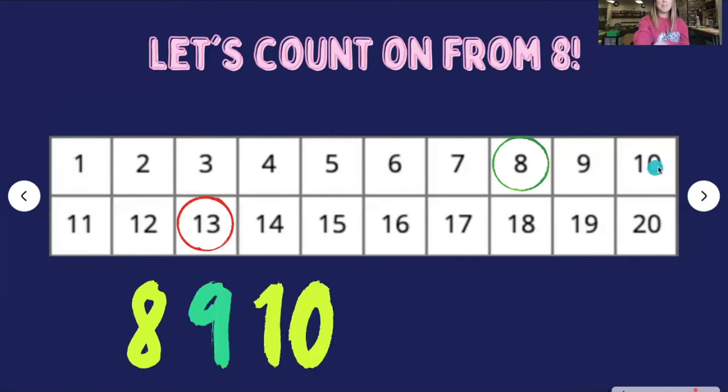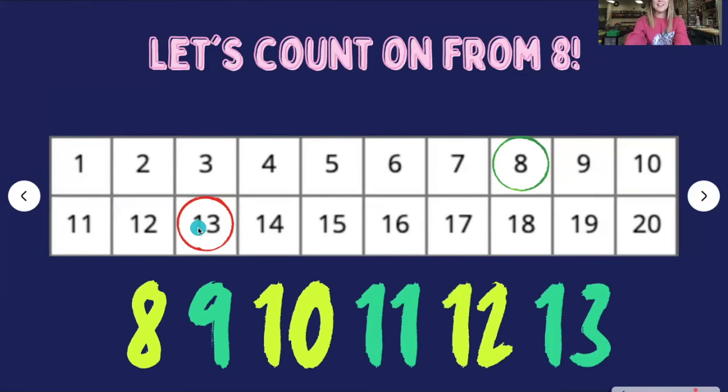All right. I made it to the end of my number line. I need to know where to go next. When you get to the end of a row, it's just like when you're reading. You return sweep. So go down to the next row, but back at the beginning. Listen as I keep counting. 11, 12, 13. I made it all the way up to 13. I didn't even need to count all 13 numbers because I started at the number 8. That was faster.